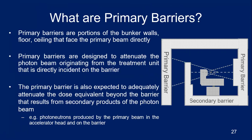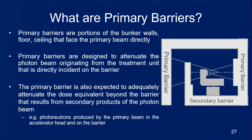Primary barriers are portions of the bunker walls, floor, and ceiling that directly face the primary beam. They are designed to attenuate the photon beam from the treatment head directly incident on the barrier, and must also adequately attenuate secondary products such as patient scatter, and photoneutrons produced in the accelerator head and barrier — particularly for high energy beams.